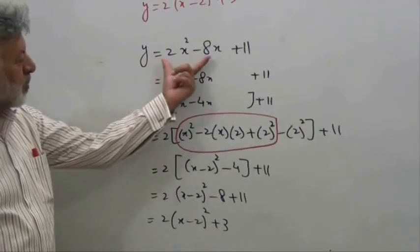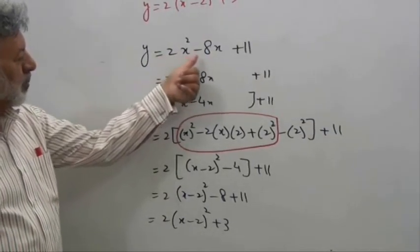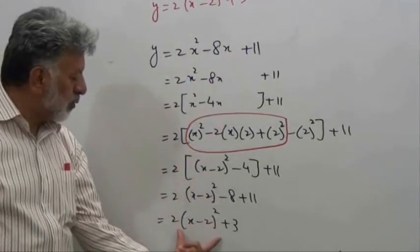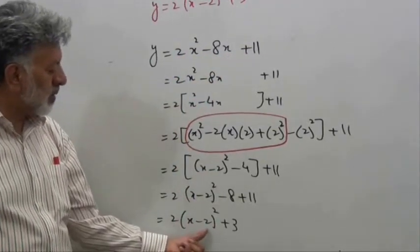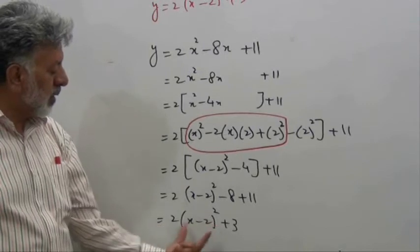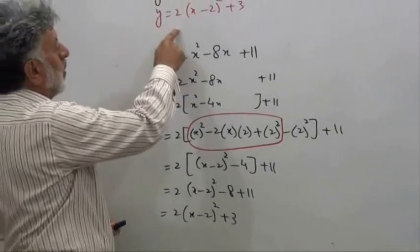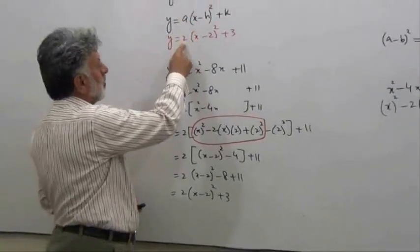The expression y equals 2x squared minus 8x plus 11 has been changed to 2 times the quantity x minus 2 squared plus 3. But let's compare this form to the given form. Now a is 2, so this is positive.